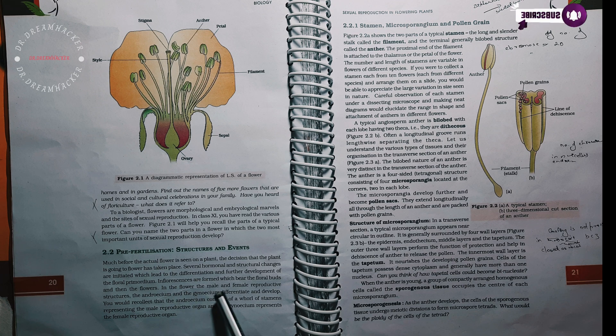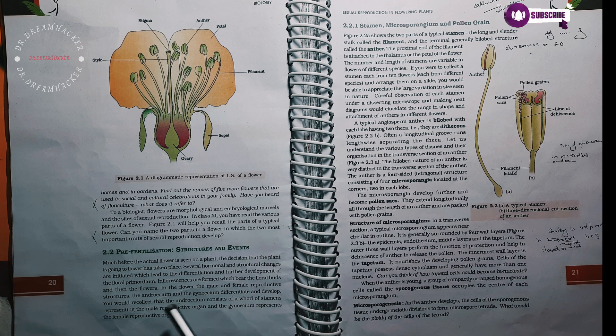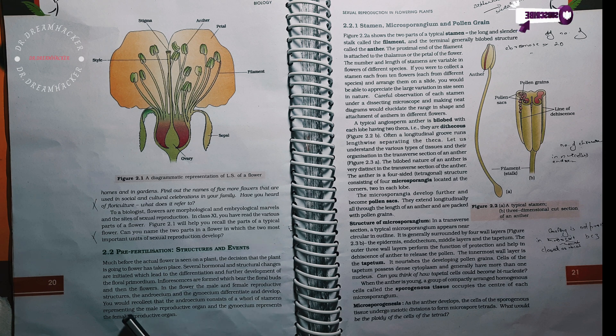In the flower, the male and female reproductive structures, the androecium and the gynoecium, differentiate and develop. You could recollect that the androecium consists of a whorl of stamens representing the male reproductive organ and the gynoecium represents the female reproductive organ.